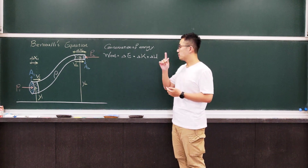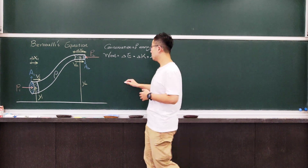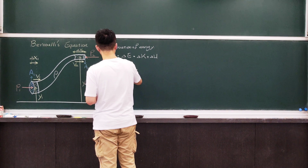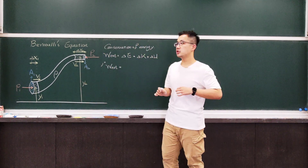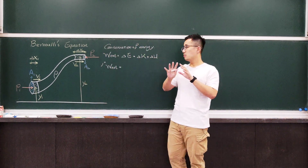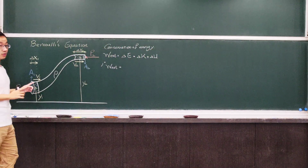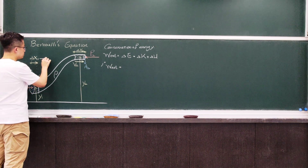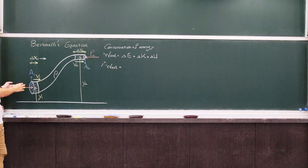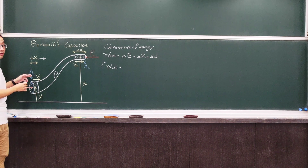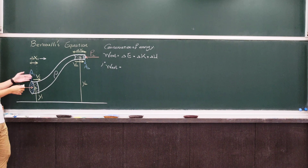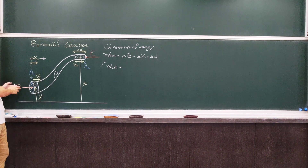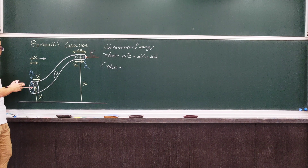Let's start from the first term, which is the external work. The external work should be separated into two parts. One is the positive work. Let's look at the displacement — the displacement for the portion is now pointing to the right. The pressure times the cross-sectional area is the force, and the force is now pointing in the same direction as the displacement.